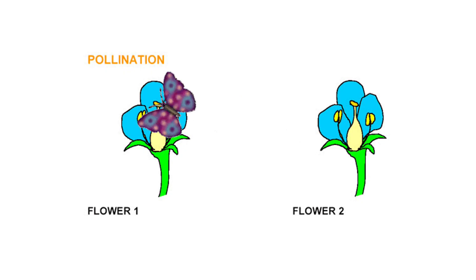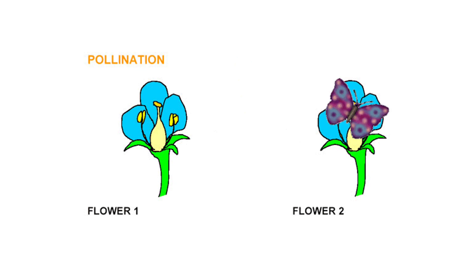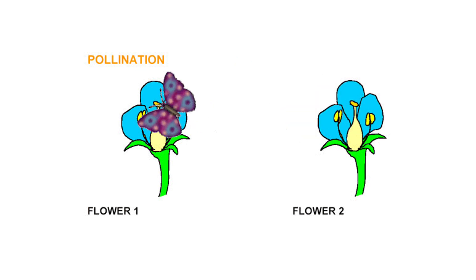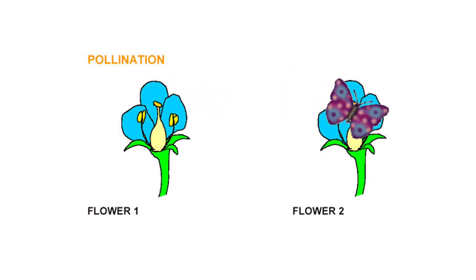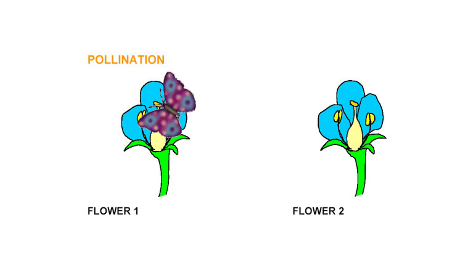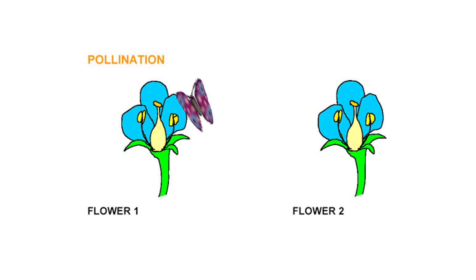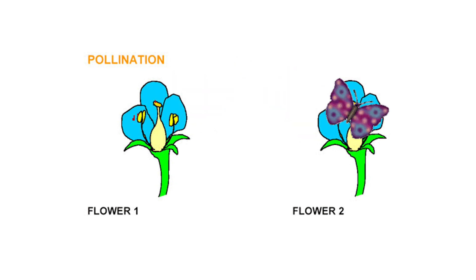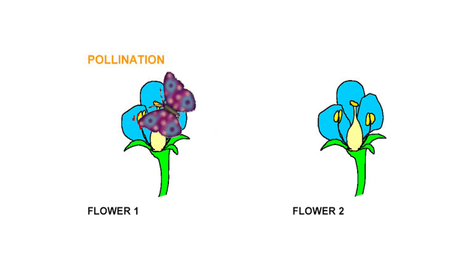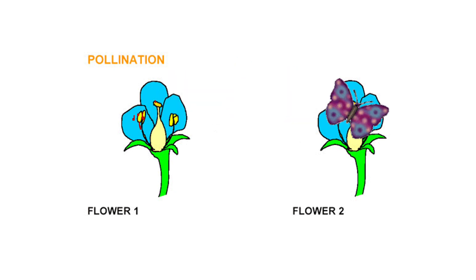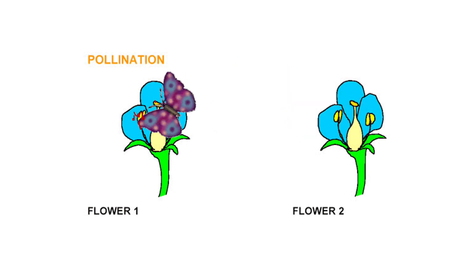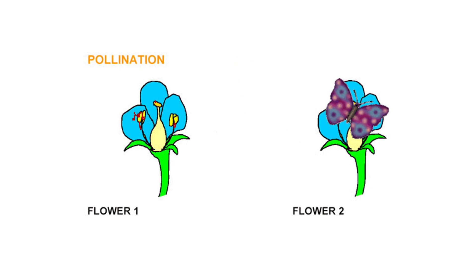As you all know, the pollen grain is made on the anther, which is a part of the stamen — the male part of the flower. Once the pollen grains are made, they exist on the top of the anther. I am putting them here in red color — you can see the red dots. These are the pollen grains. You can see pollen grains in your garden if you have a hibiscus flower.